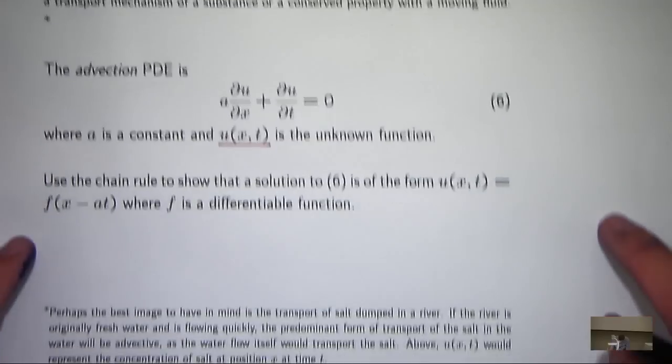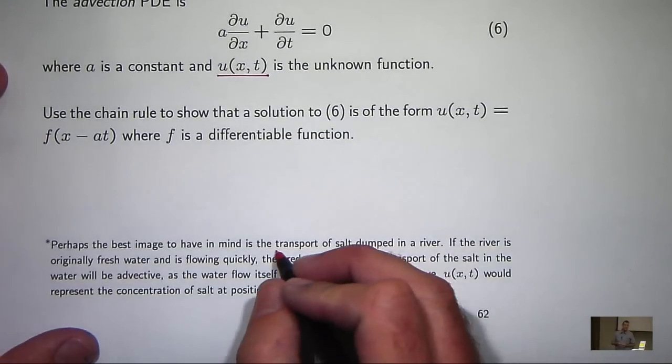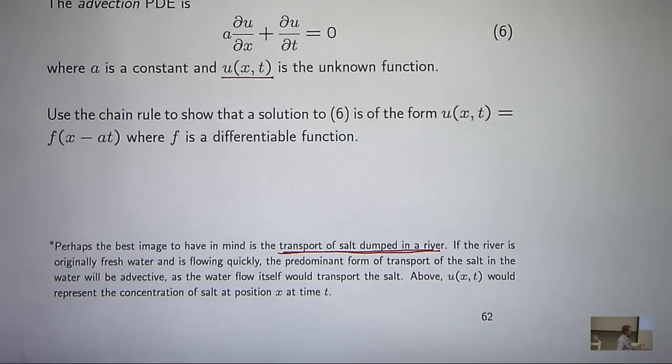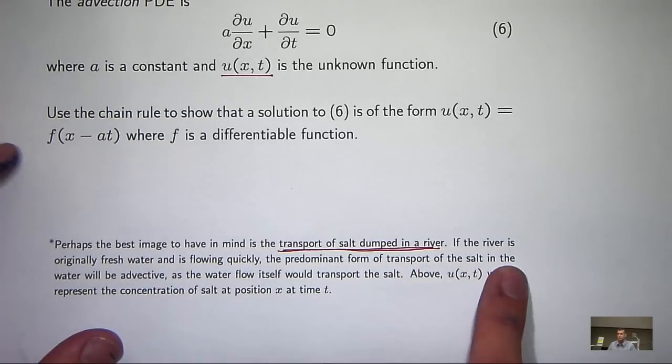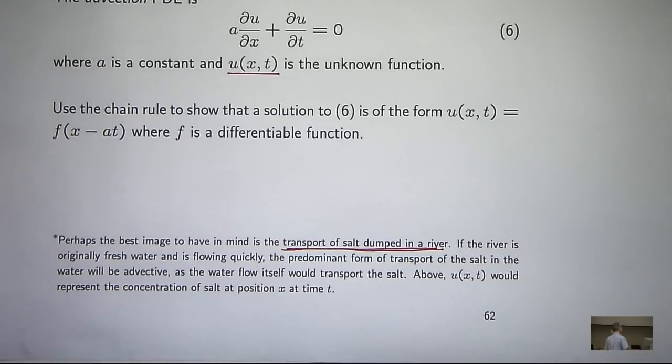Now, just to give you some insight into that, with advection, you can think of it as representing the transport of salt that's dumped in a river. If the river is originally fresh water and is flowing quickly, the predominant form of transport of the salt in the water will be advective. So you can think of u as representing the concentration of salt in a river at time t at position x. So x would represent position or how far you go down the river.